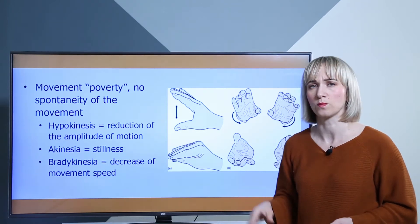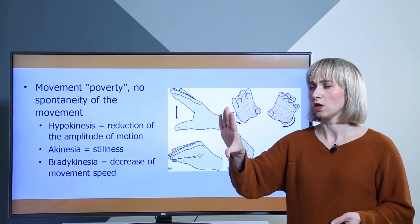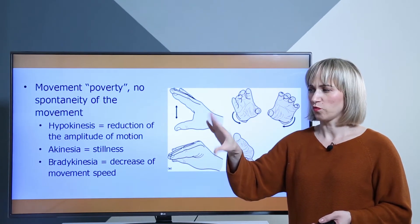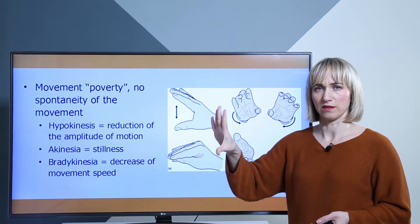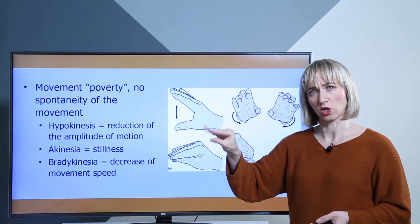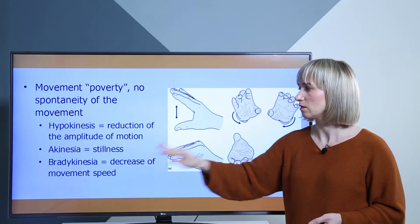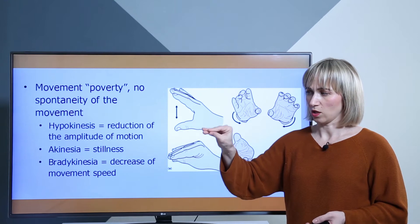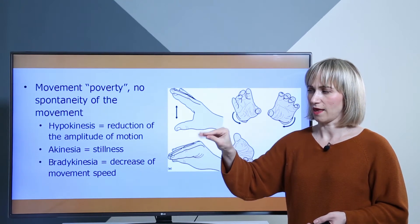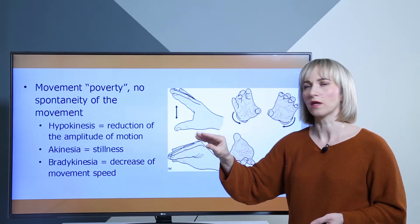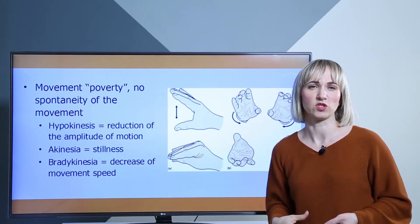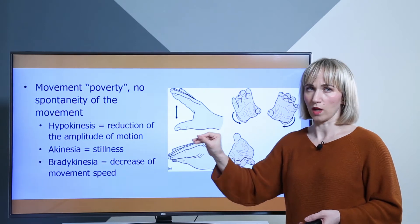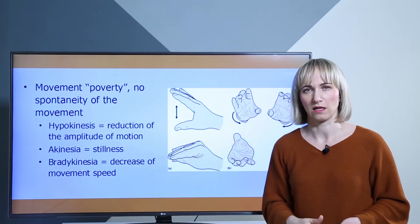You can test this by telling your patient to do a repetitive finger movement. If you see that the amplitude is normal but the speed is slowing, then the patient has bradykinesia. But if the speed is okay and you can see that the amplitude of the movement is changing, then the patient has hypokinesia. And if the patient doesn't move at all at one point, that means there is akinesia.